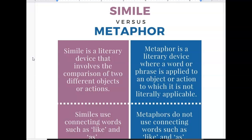So a simile is a literary device that involves a comparison of two different objects or actions. It takes two things and compares them. While a metaphor is a literary device where a word or phrase is applied to an object or action to which it is not literally applicable. This is comparing two things. This is taking a word or phrase and saying that it is something else. But when we say that it is something else, we're creating this connection between them.